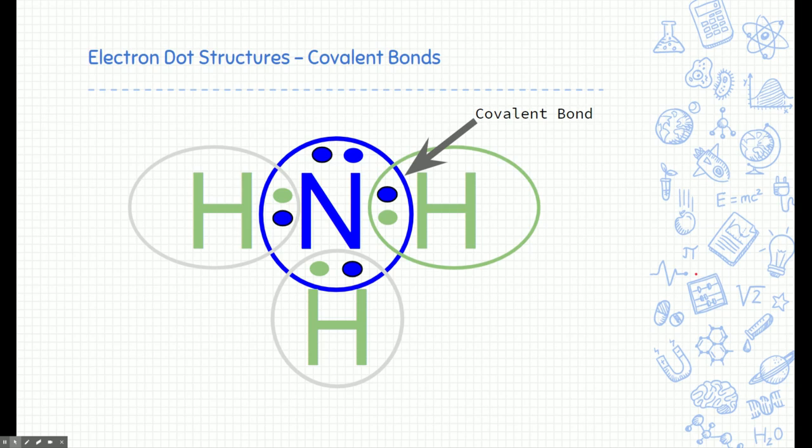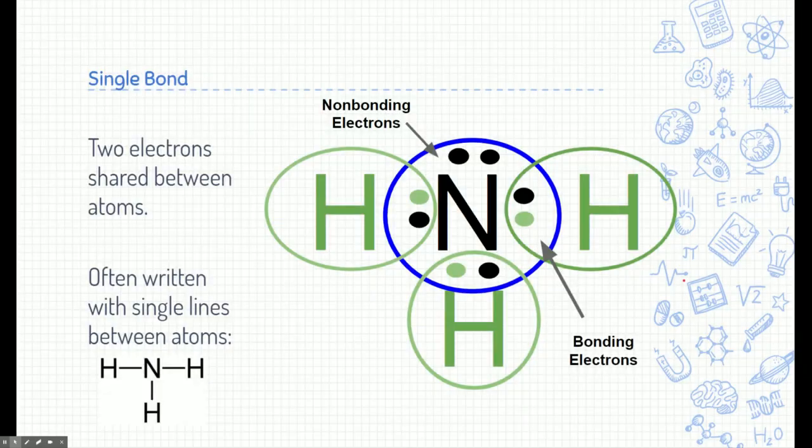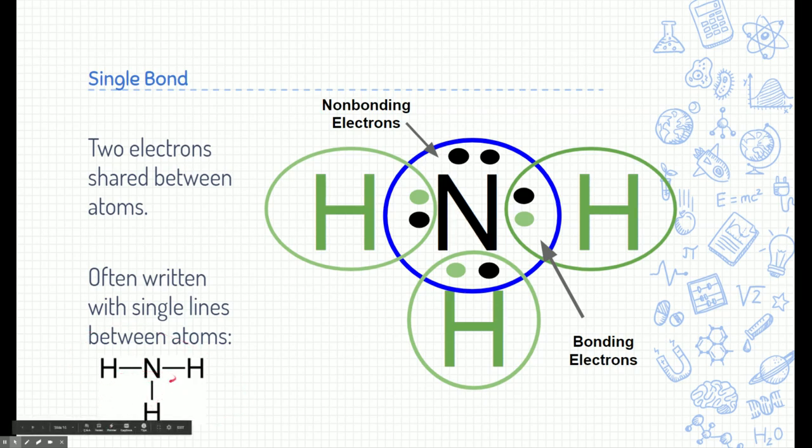Now, again, this is how a covalent bond works, where they share electrons, where those electrons overlap. This, by the way, is the formula for this compound, NH3. Now, what we just saw was a single bond. A single bond is where two electrons are shared between atoms. So this compound right here has three single bonds. Here's a single bond. Here's a single bond. And here's a single bond. Oftentimes, scientists write single bonds with lines between them. So here would be NH3 with three lines between the Ns and the Hs. Those are just two electrons represented in those lines. Now, nitrogen does have some non-bonding electrons. These electrons up here are not participating in this bond.